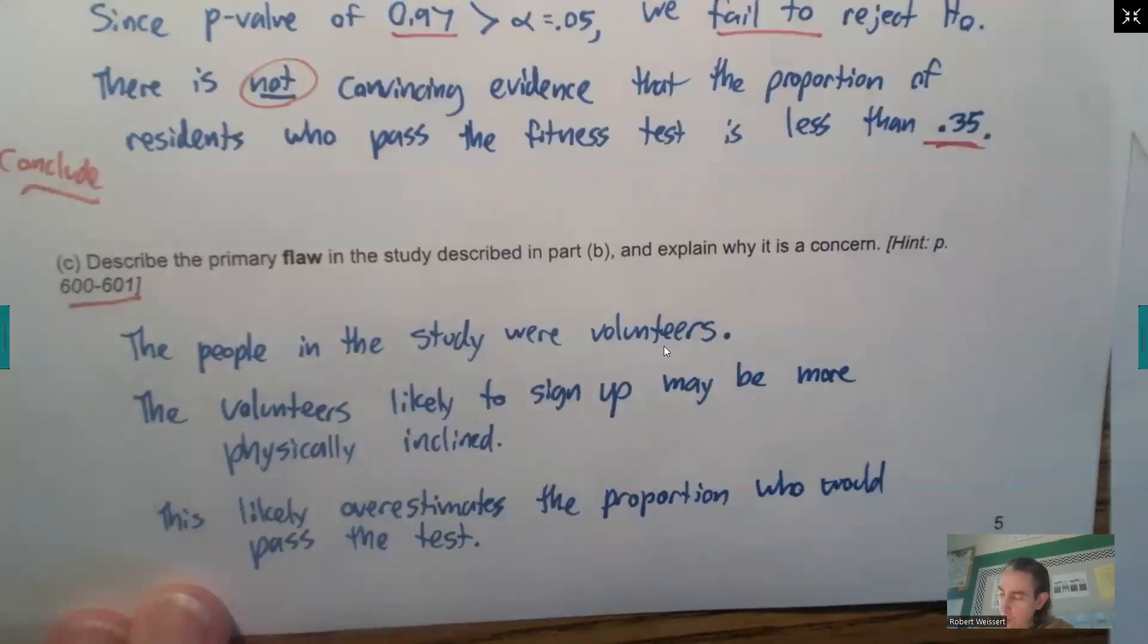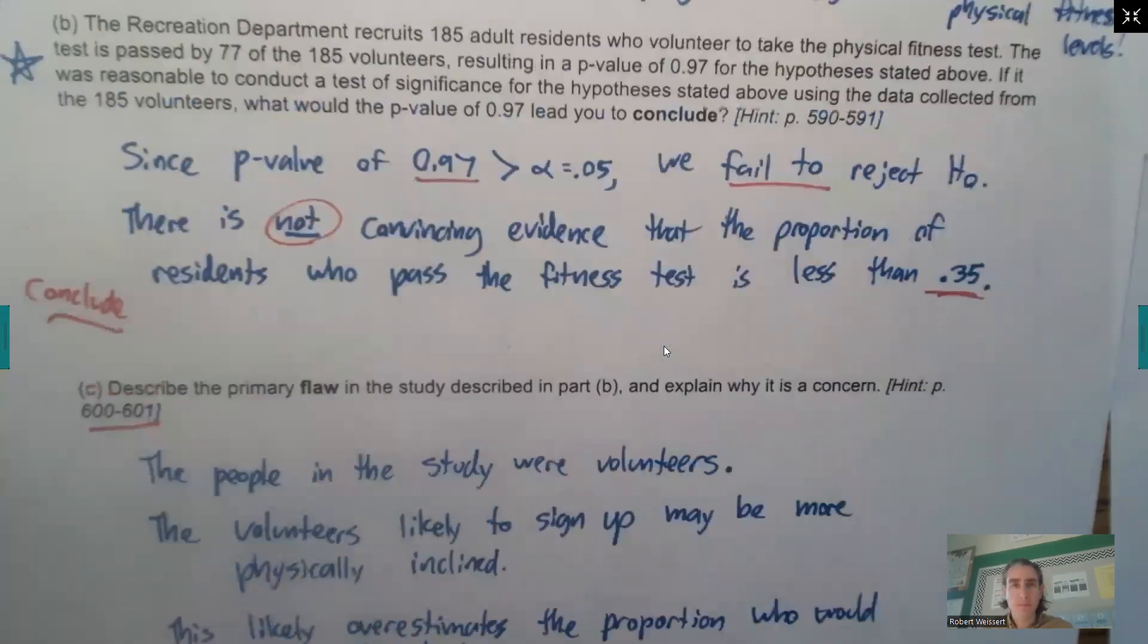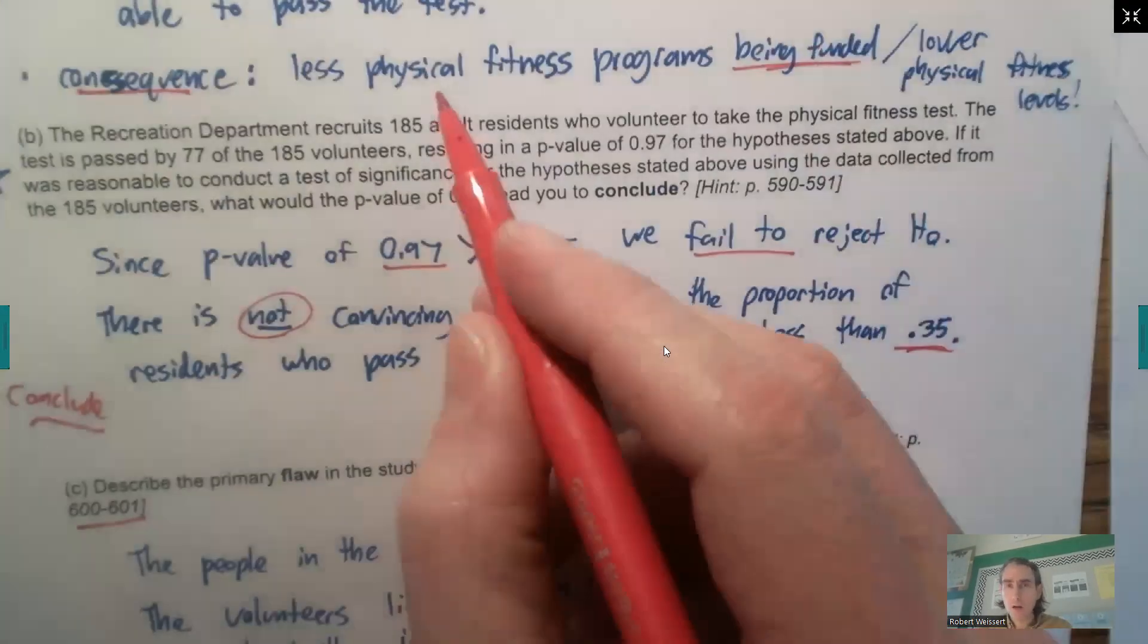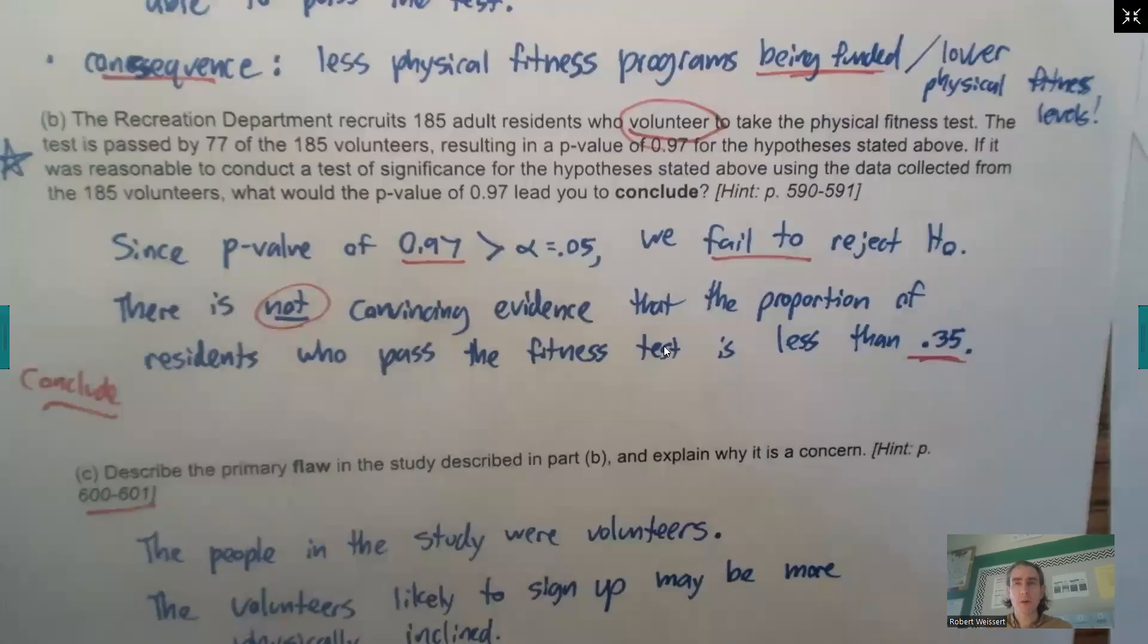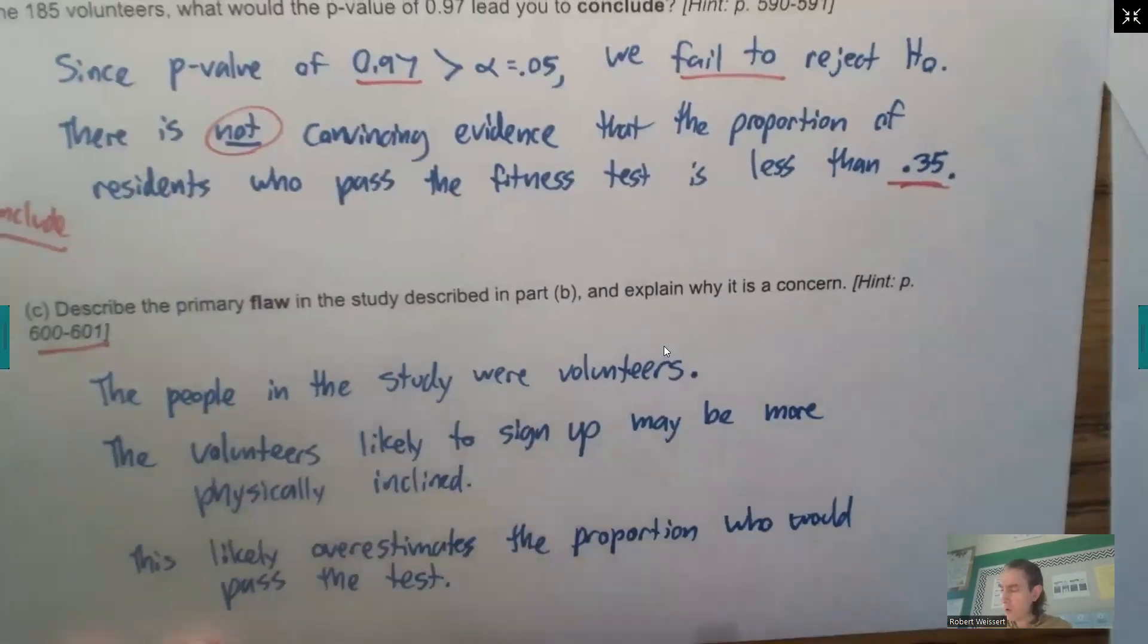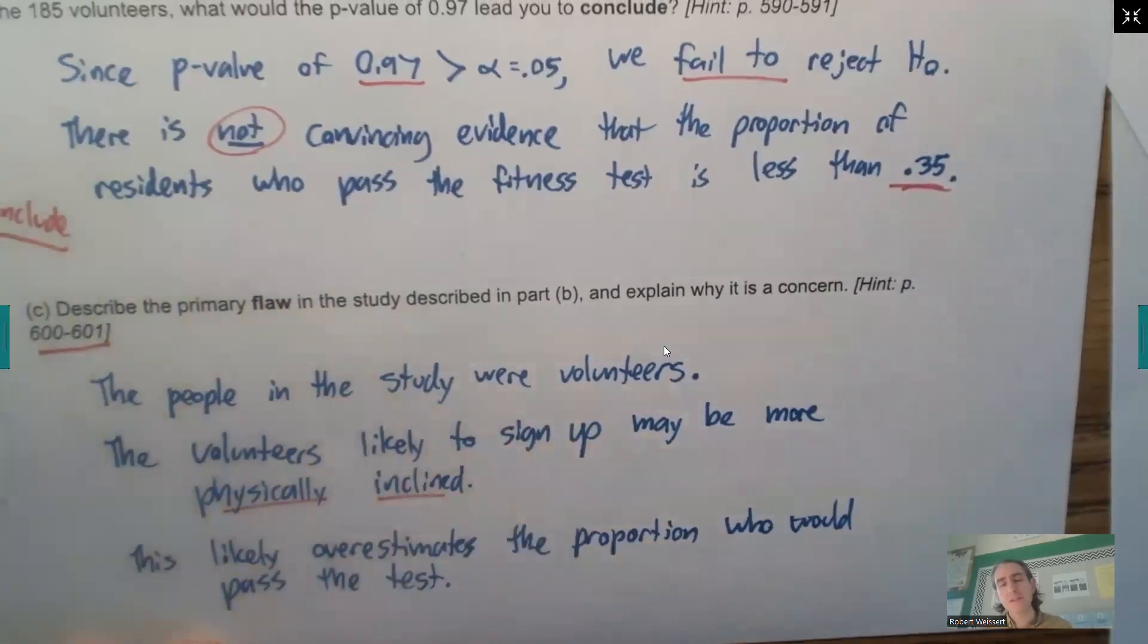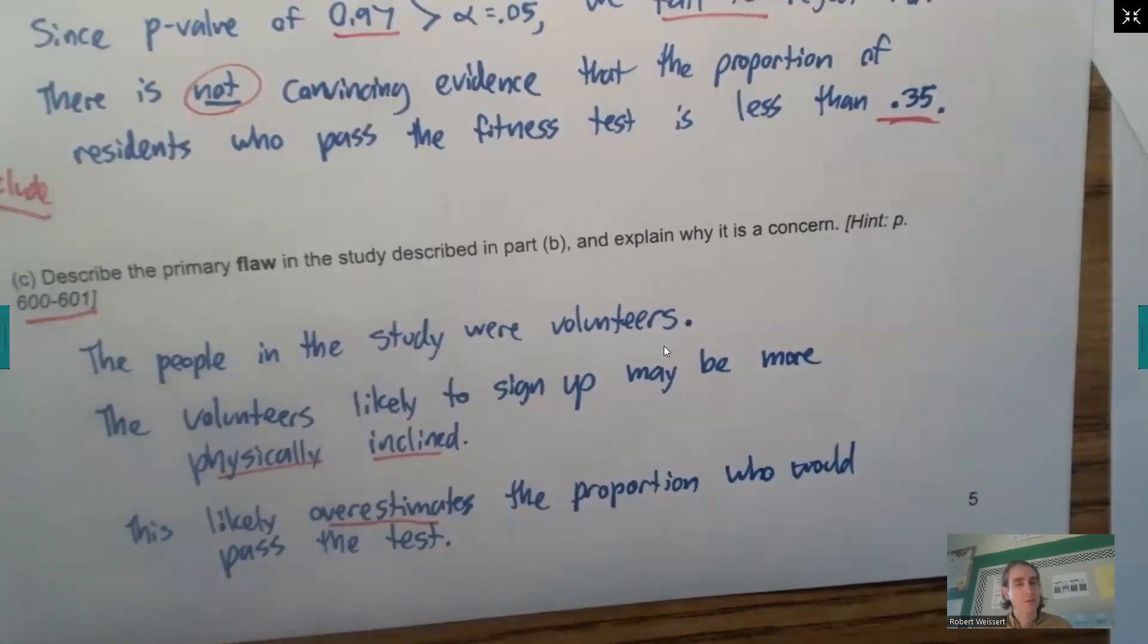In this problem, the primary flaw in the study is the lack of random sampling. If you look up here, it says adult residents who volunteer. Now, people who volunteer for something might be inclined to want to do that. So volunteers likely sign up, might be more physically inclined from the onset, and therefore it may be possible that the study overestimates the true proportion who would pass the test. So volunteers, you can't make an inference to a larger population. So this is the primary flaw in the study.